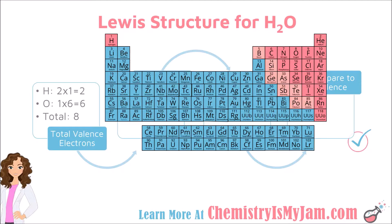For oxygen, there is 1 oxygen within the molecule. To get the valence electrons, count over skipping the transition metals. Oxygen is in the 6th group over and has 6 valence electrons. 1 times 6 gives me 6. My total valence electrons is 8. There is not a charge for this molecule, so that is it for my total valence electrons. You do not need to add or subtract anything from that total.